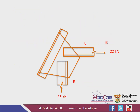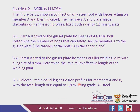Here is diagram member A, which is subjected to 88 kN — it's a tie. Here is a strut subjected to 96 kN, which is member B. So, 5.3 asks us to select suitable equal leg angle iron profiles for members A and B, with the total length of member B equal to 1.8 meters, using grade 43 steel.